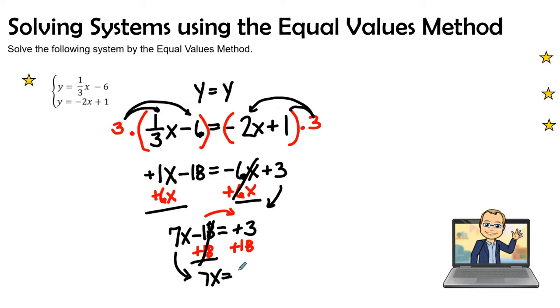And 18 plus 3 is a positive 21. Let's go ahead and divide by my coefficient of 7. Therefore, x will equal a positive 3.